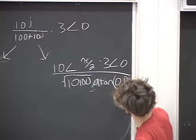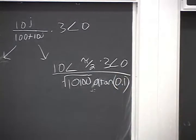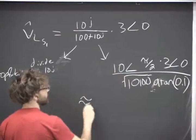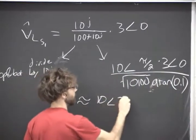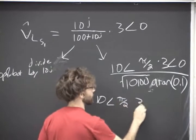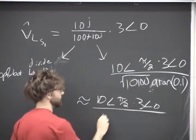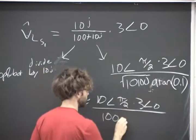Yeah, 0.1, right? Okay. So this thing, it's roughly going to be 10 angle pi over 2, 3 angle 0. This thing's pretty much just 100. This thing's pretty much just 0.1.